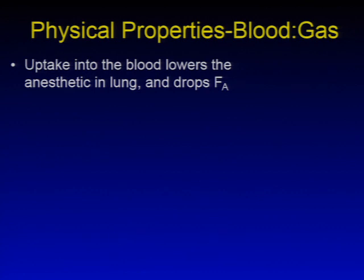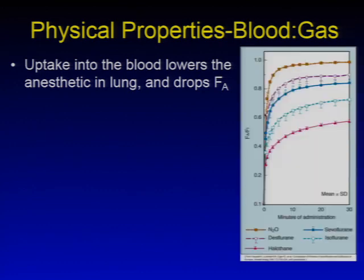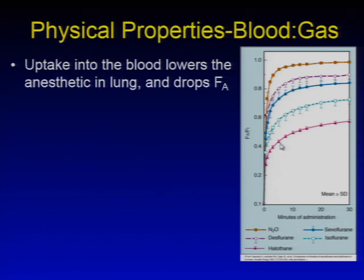Understanding the blood-gas coefficients: when we give our anesthetic agent, the amount in the lungs gets lowered by being dissolved and carried away in the blood, which drops the fraction sitting in our alveoli — that's the FA. We can examine this with FA over FI plots, which describe the way each agent reaches its steady-state concentration. You can see that desflurane and nitrous are way up high, while halothane is way down below, meaning it takes a while for halothane to come up to steady-state concentration.